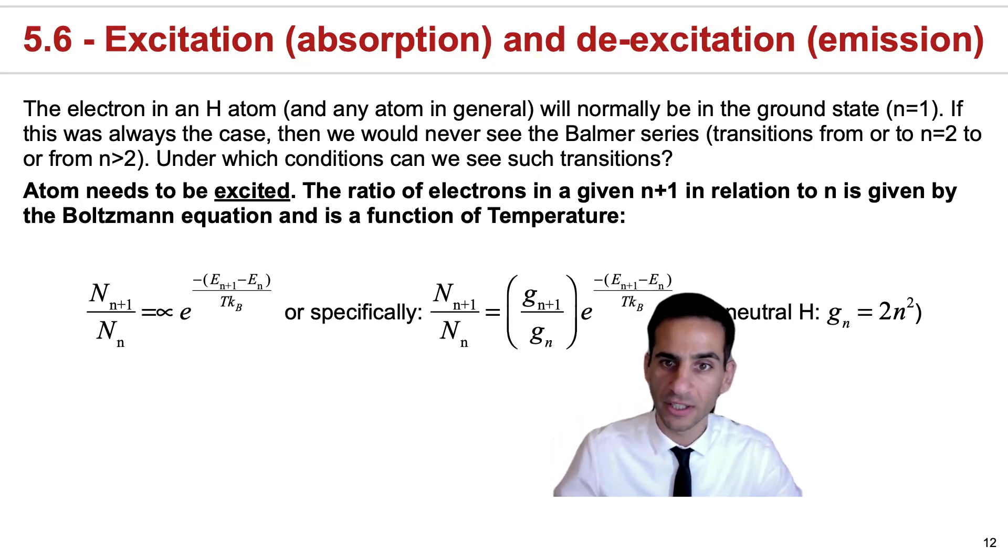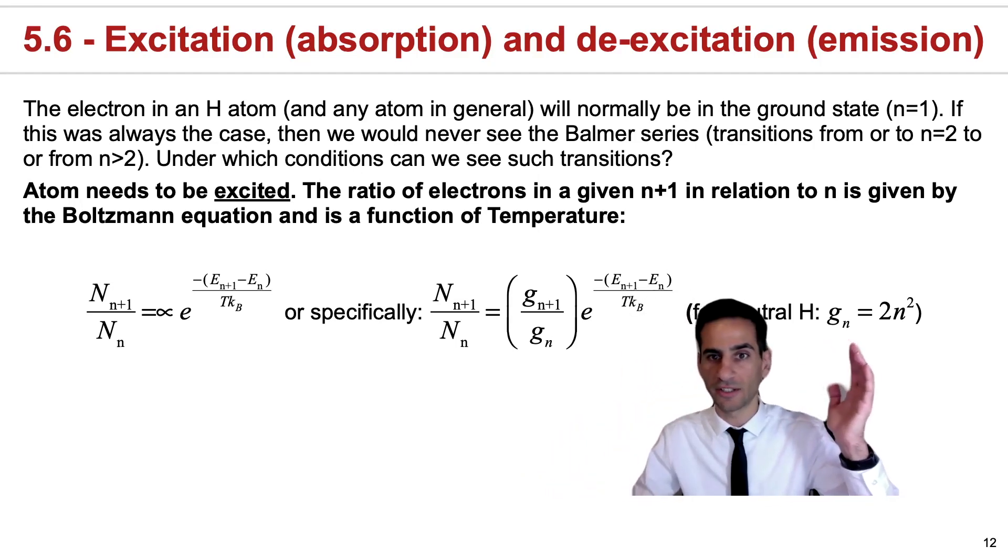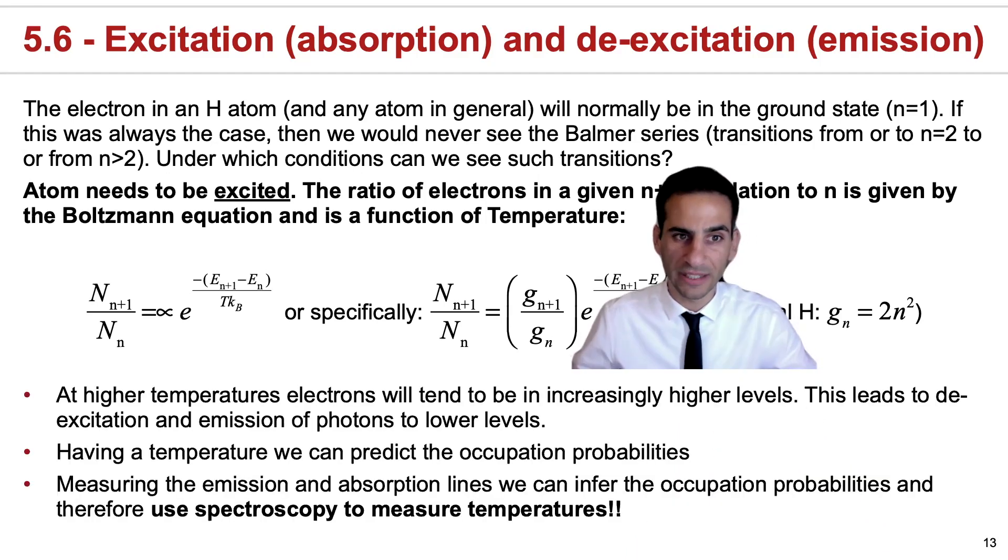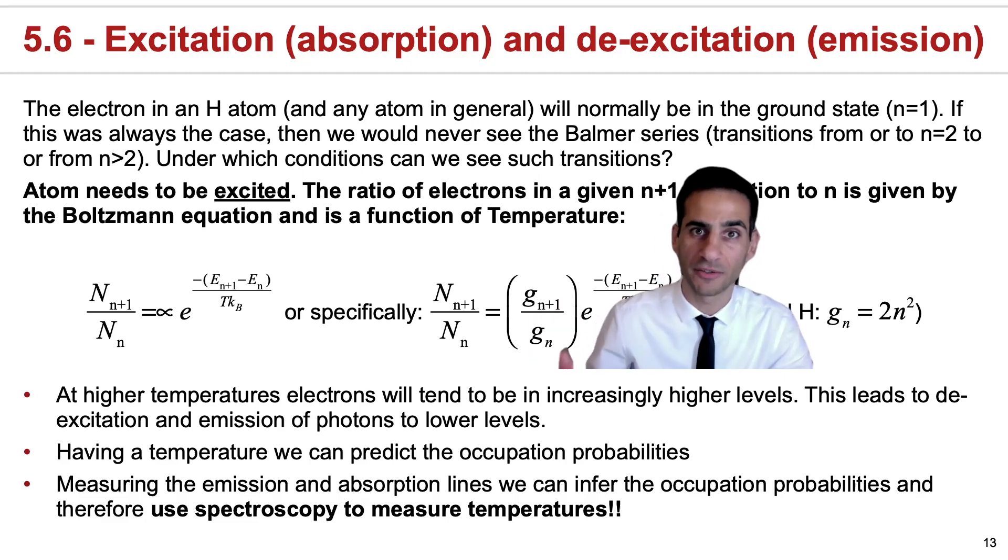For neutral hydrogen, this is relatively simple. Now, what this all tells us is that at higher temperatures, electrons will tend to be in increasingly higher levels. The higher the temperature, the more excited you are expected to find an atom. And this creates the conditions necessary for de-excitation and emission of photons to lower levels.